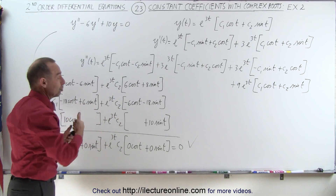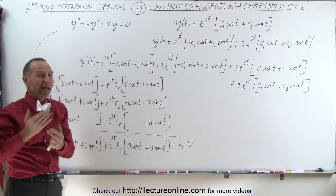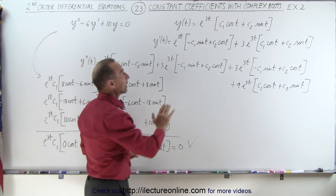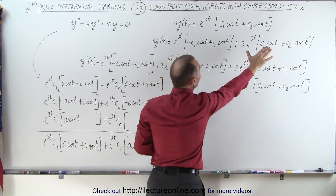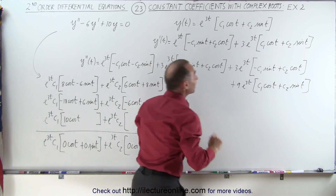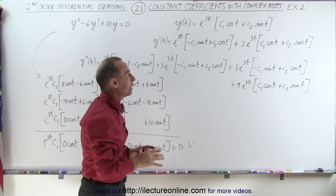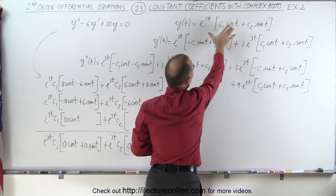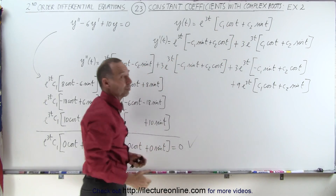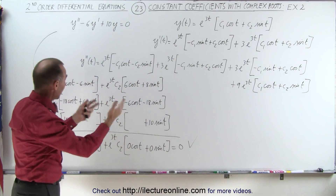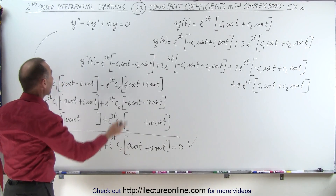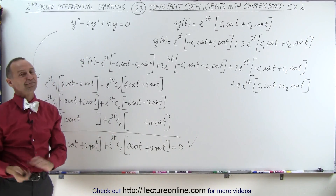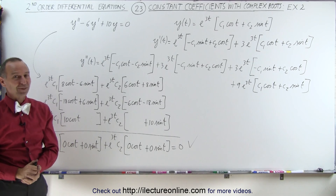Complex roots involve a real part and an imaginary part, but as shown in the previous video, we're able to eliminate the imaginary part by combining constants in a particular way, so the general solution is written entirely in real terms rather than imaginary terms. As you can see, when we plug everything back into the original equation, it works out. That's how it's done.